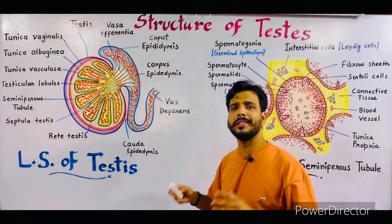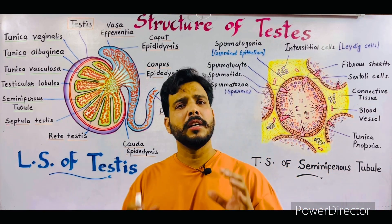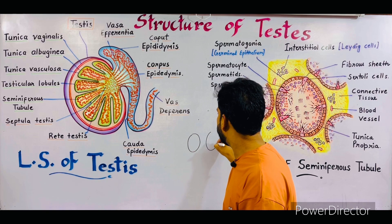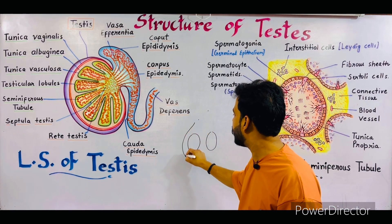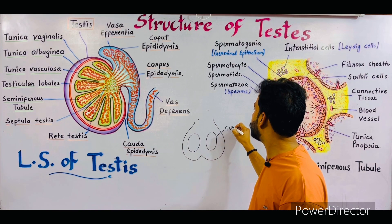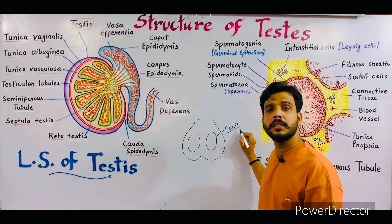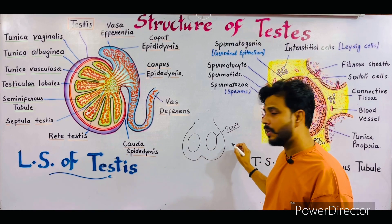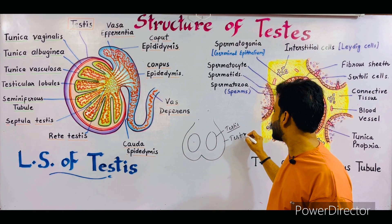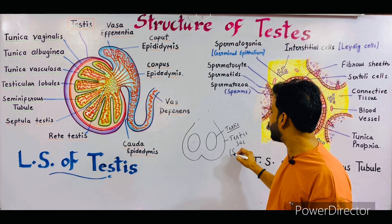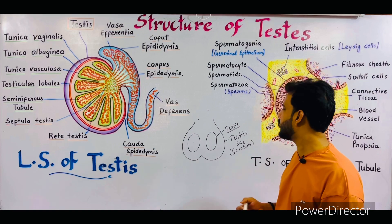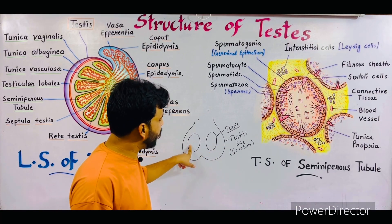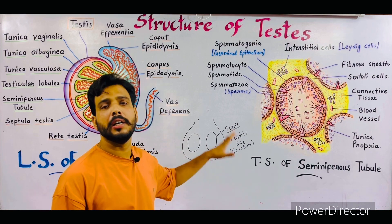First of all, it is very important to understand what the testis are. Testis are the main reproductive organs of the male. As you can see, there are two testis found in the male which are present inside the testis sac or the scrotum. The spelling 'testis' is singular — T-E-S-T-I-S — while 'testes' is the plural one. These testis are present outside of the abdominal cavity, situated inside a sac-like structure called the testis sac or the scrotum.